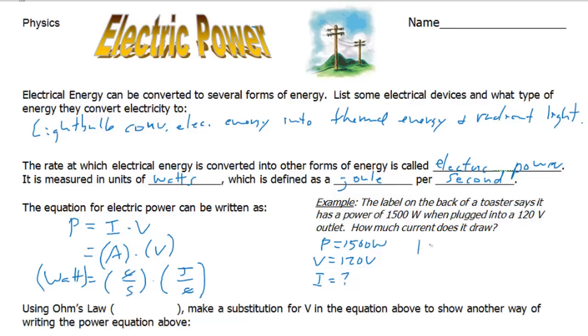So we can use this equation that we know, P equals IV. We can plug in our known values. Power is 1500, voltage is 120. Do some simple algebra here, divide both sides by 120, and the current is 1500 divided by 120. That's the same as 150 over 12. 150 over 12 is 12.5. And the units, this is current, would be amps. So if you were to use your multimeter and measure the amount of current going through that toaster, it would be 12.5 amps.